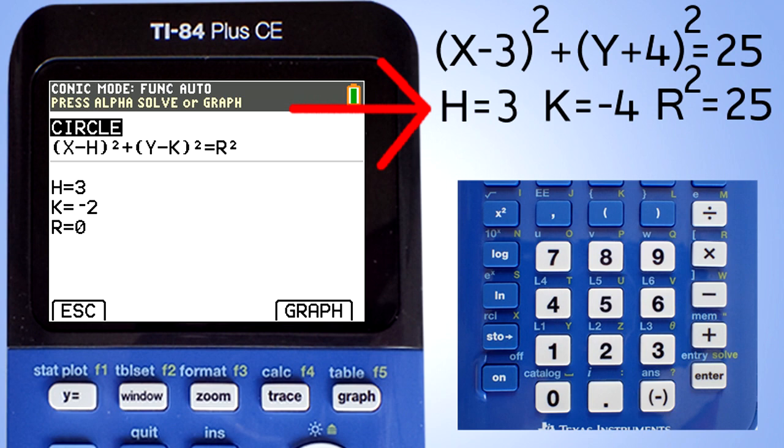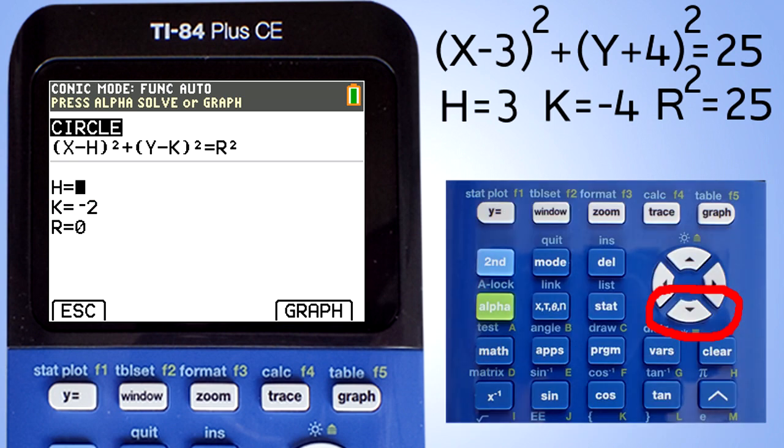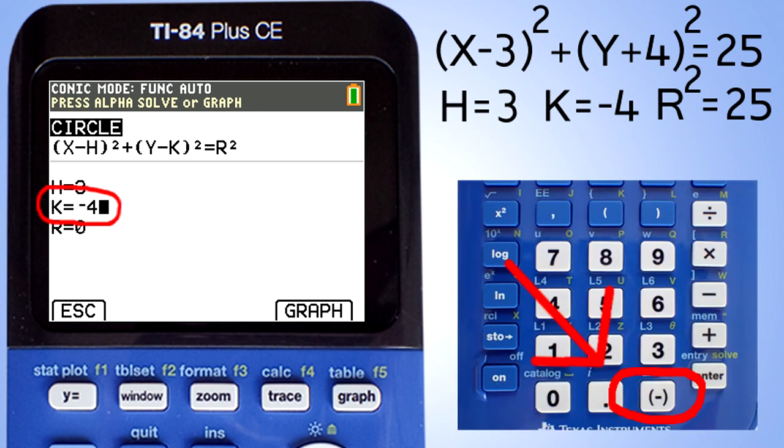Now let's plug in these numbers into the calculator. H equals 3. I already have a 3 there. Now use the down arrow key and go to K, and enter a negative 4 for K. Remember to use this negative sign here and not the minus sign.